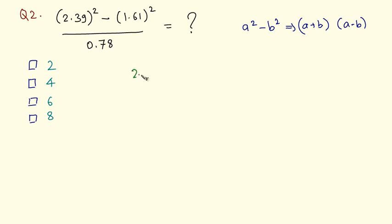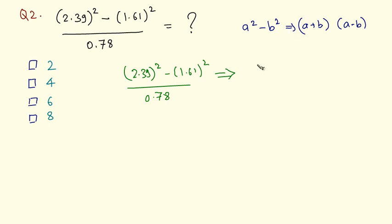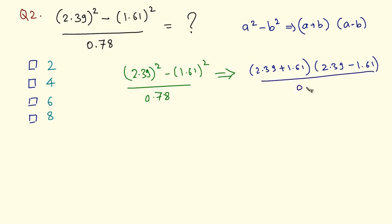So 2.39 squared minus 1.61 squared upon 0.78 can be written using this formula as 2.39 plus 1.61 into 2.39 minus 1.61 divided by 0.78. Now 2.39 plus 1.61 equals 4.00.